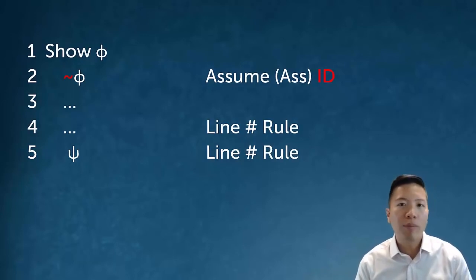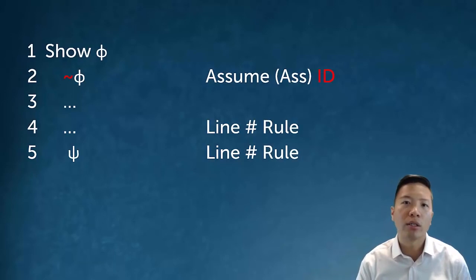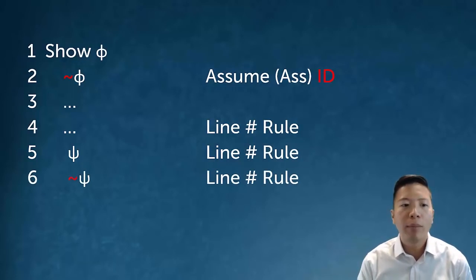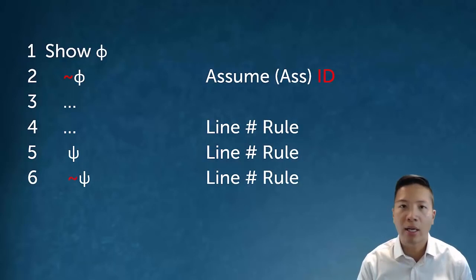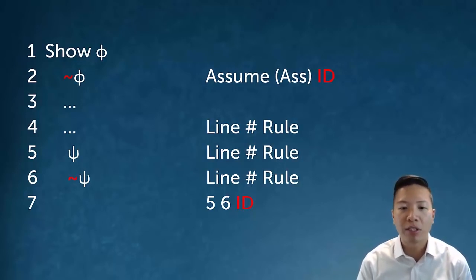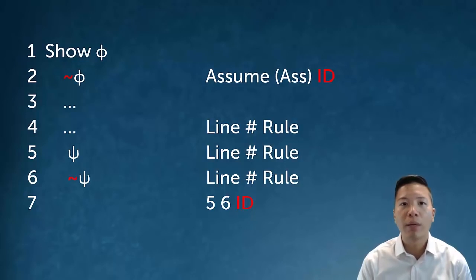What does a proof in this pattern look like? If I want to show phi, I can immediately assume the opposite — do an indirect derivation and assume that not phi is true. Once I start an assume ID, I'm looking for some sort of contradiction. I begin the proof with a lot of automatic moves and arrive at some line later, call it psi. If it turns out I can also show not psi, I have a contradiction. Since if I have a statement psi and I also know not psi, that's impossible. So in my derivation I point to those two lines and say that's contradictory — lines 5 and 6, ID — meaning I've just done an indirect derivation because I've shown that a contradiction follows from my assumption.